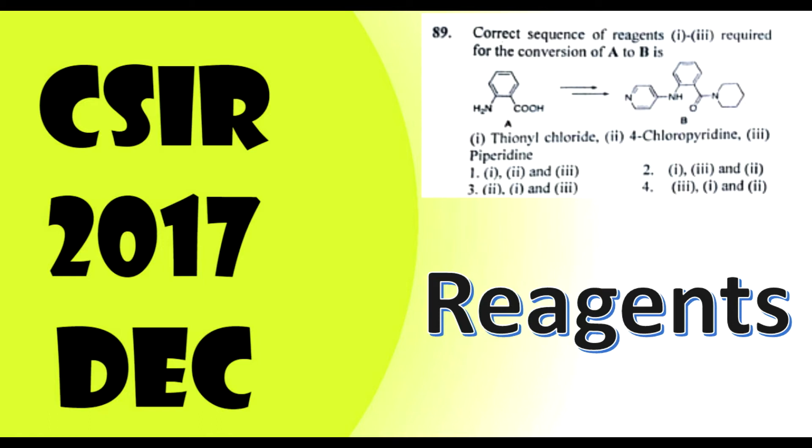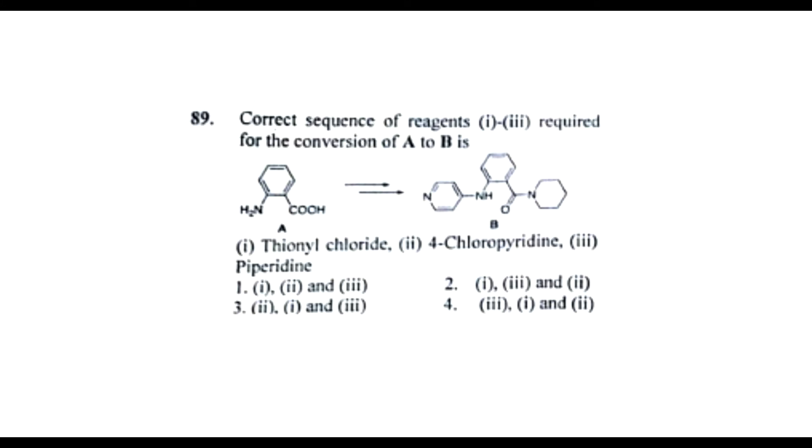Hello friends, let us look at a question from 2017 December about reagents. The question is: the correct sequence of reagents 1 to 3 required for the conversion of A to B. The reactant species A and the product species B are given.